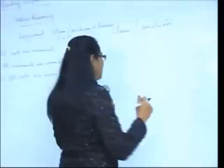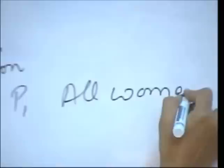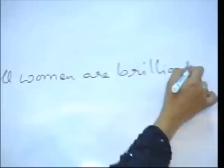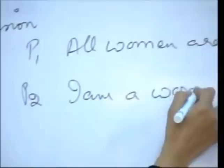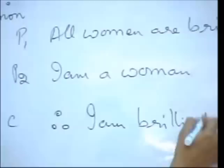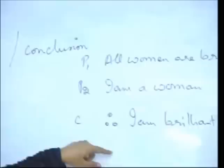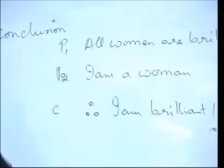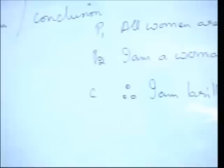When can this happen? For example, consider this argument: the first premise is a generalization — all women are brilliant. The second is a particularization — I am a woman. Based on these, the conclusion is: therefore I am brilliant. The syllogism is perfect. The logical construction is perfect.